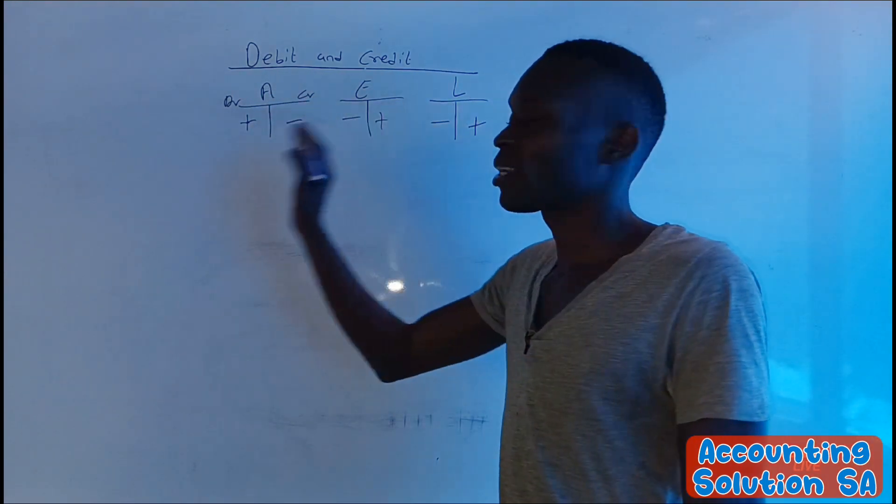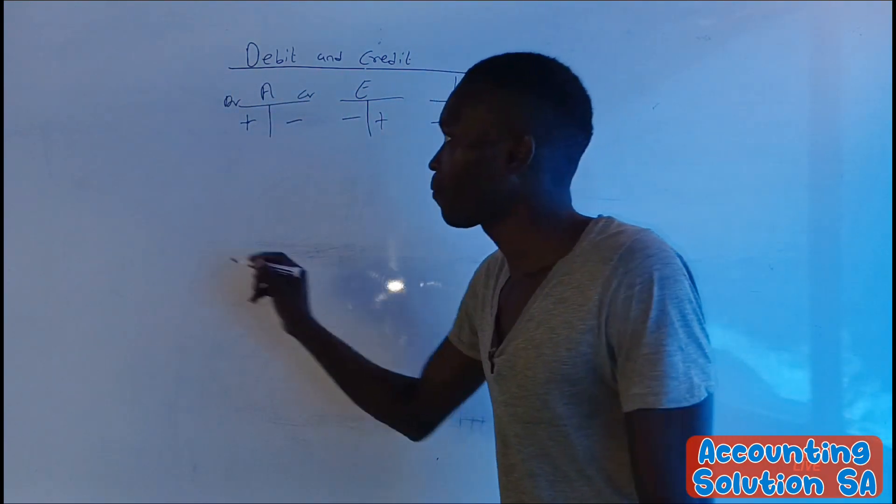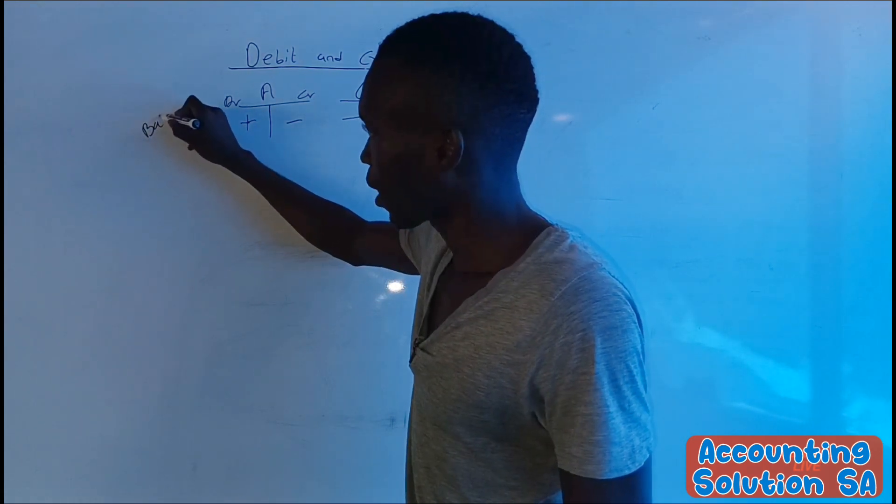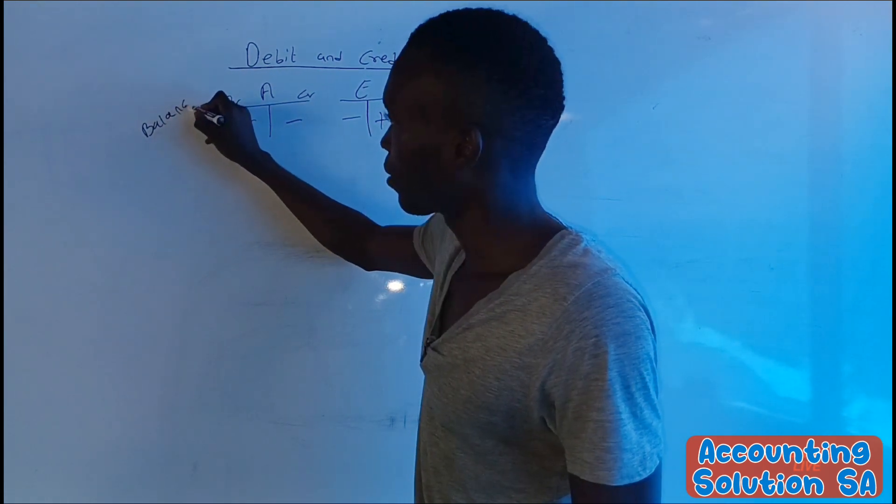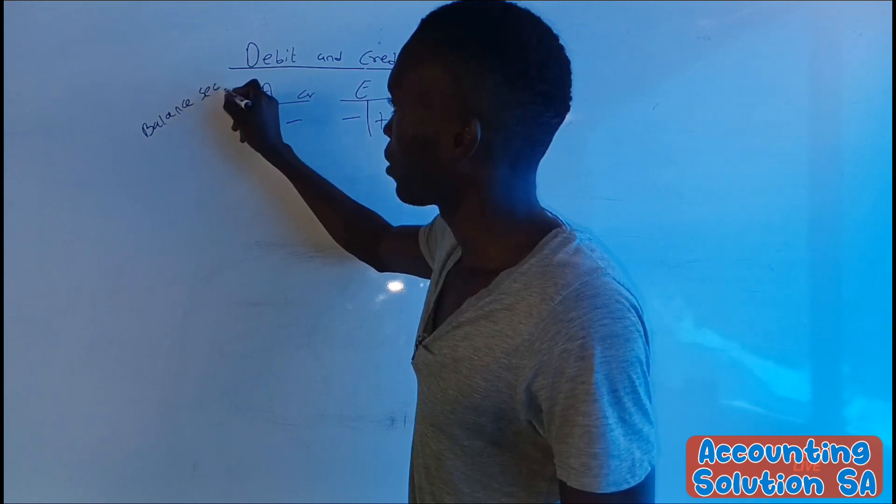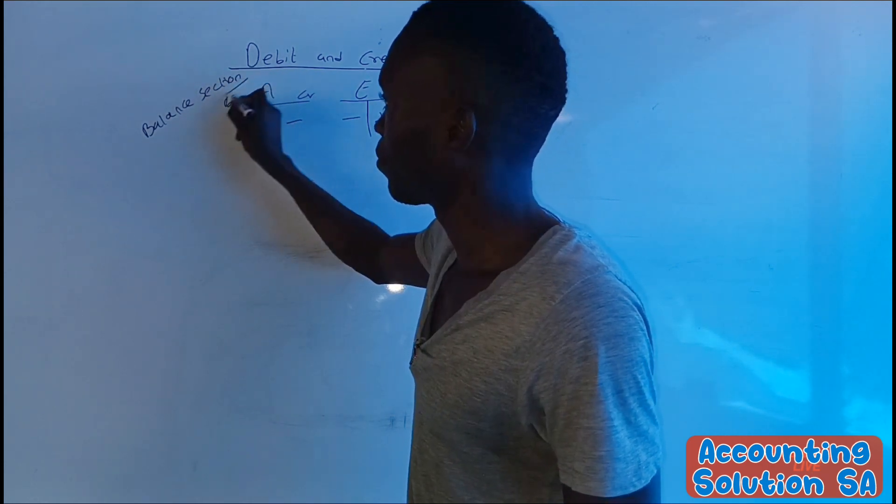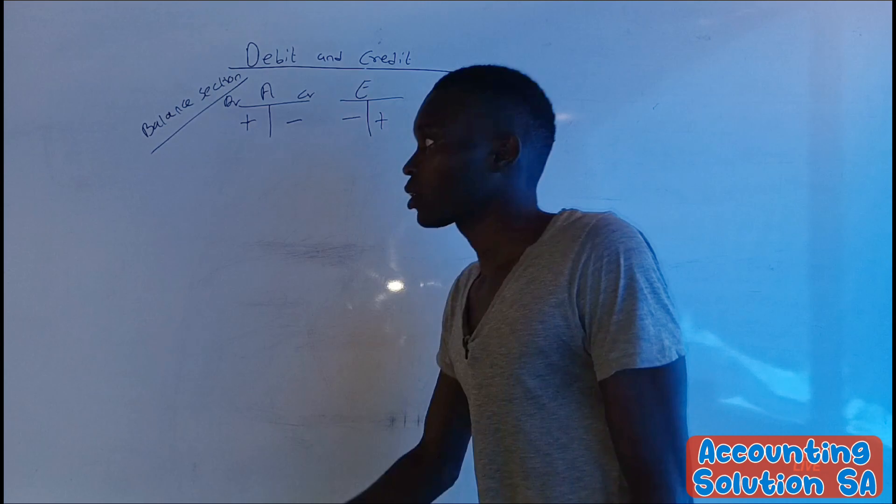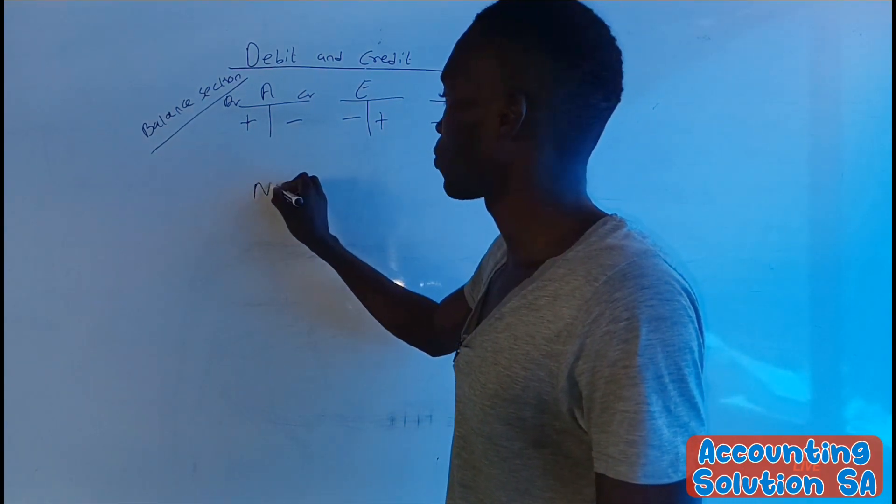This is a balance sheet section: assets, equity, and liability balance sheet section. So we also have nominal account section.